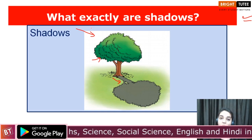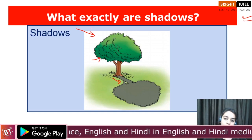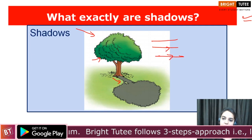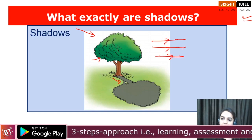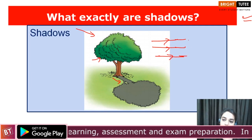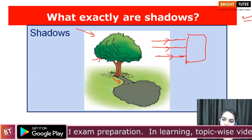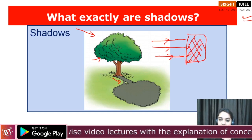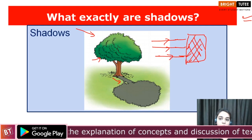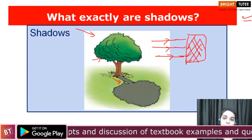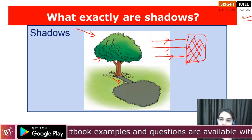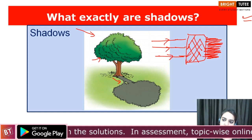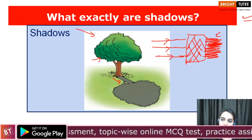But how do we define shadows? Whenever we have a beam of light coming this way — this is the beam of light — and in the path of light there comes an opaque object. This opaque object comes in between the path of light rays. What this opaque object does is it will not allow the light rays to pass through it. Instead it will block the path of light and there will be a black patch created in the opposite direction, and this black patch is the shadow.